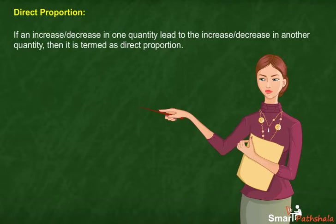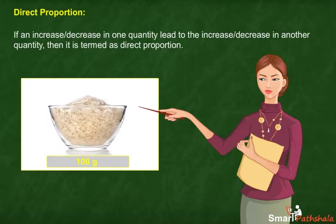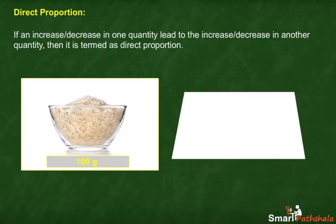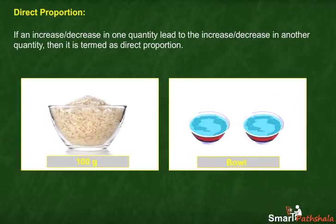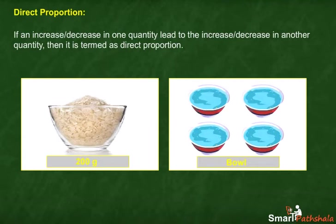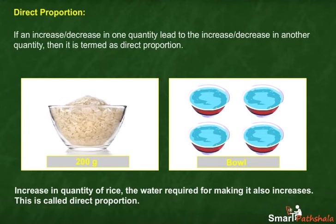Let us consider a scenario. Suppose preparation of 100g of rice requires 2 bowls of water, then preparation of 200g of rice will require 4 bowls of water. Here we can see that with increase in quantity of rice, the water required for making it also increases.